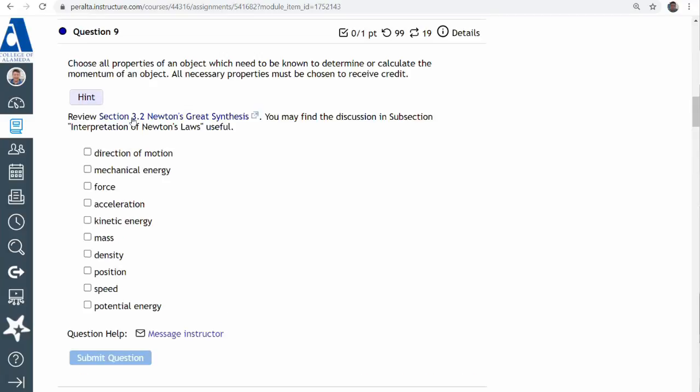So momentum is mass times velocity. Your textbook, for some reason, avoids giving you that definition, the slides too.